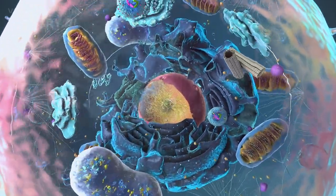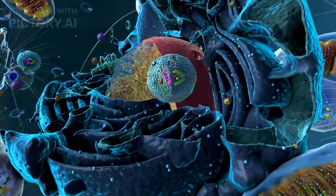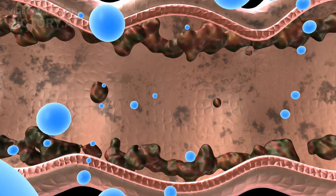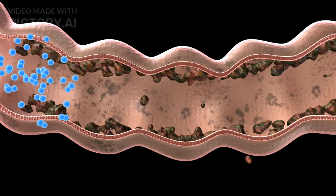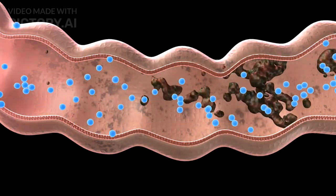Lysosomes are called by different names such as suicidal bags of the cell, the cell's waste disposal system, or demolition squads. Lysosomes are the cell's recycling centers, breaking down waste materials and cellular debris. Alongside them, peroxisomes detoxify harmful substances and break down fatty acids.